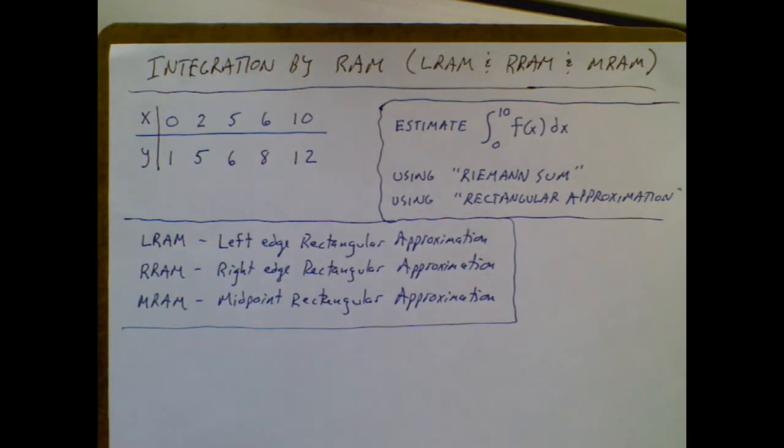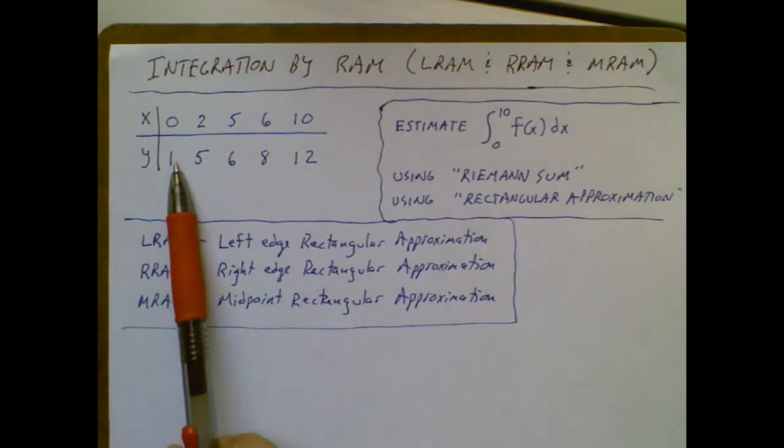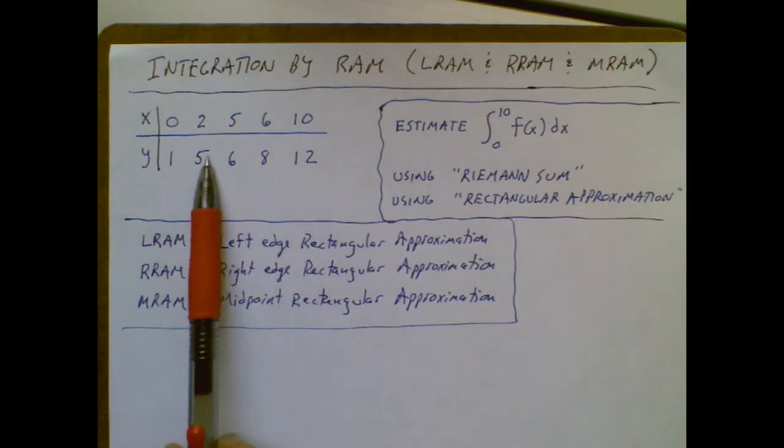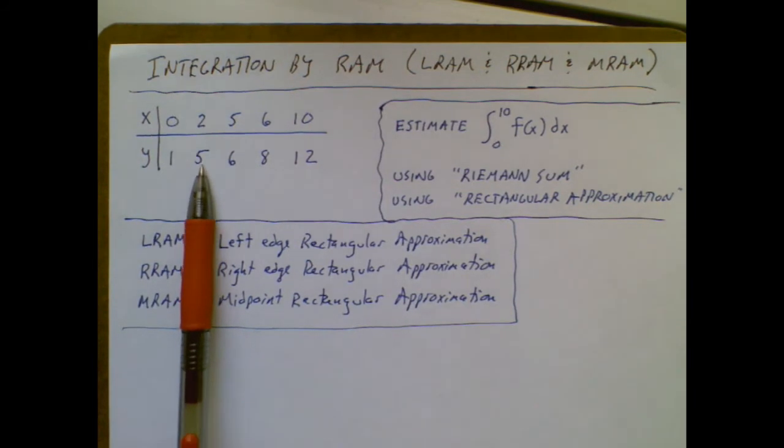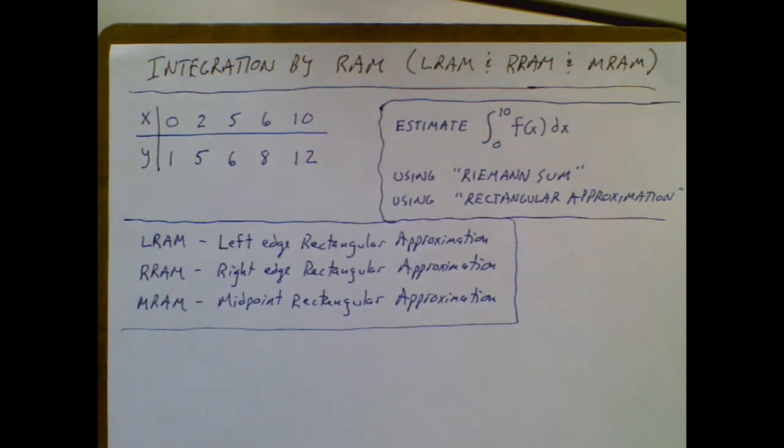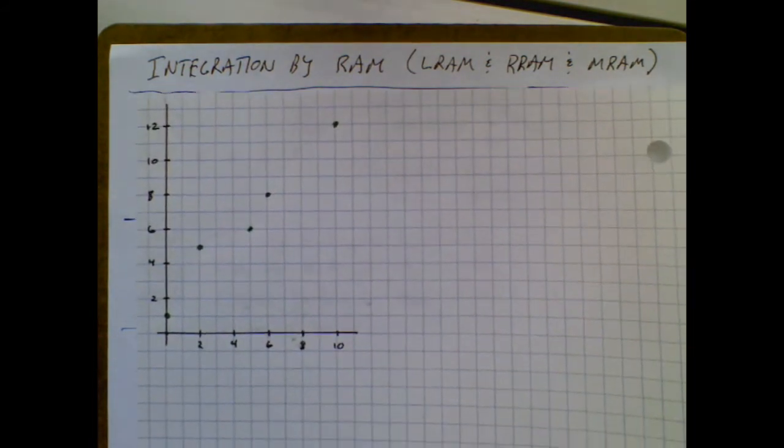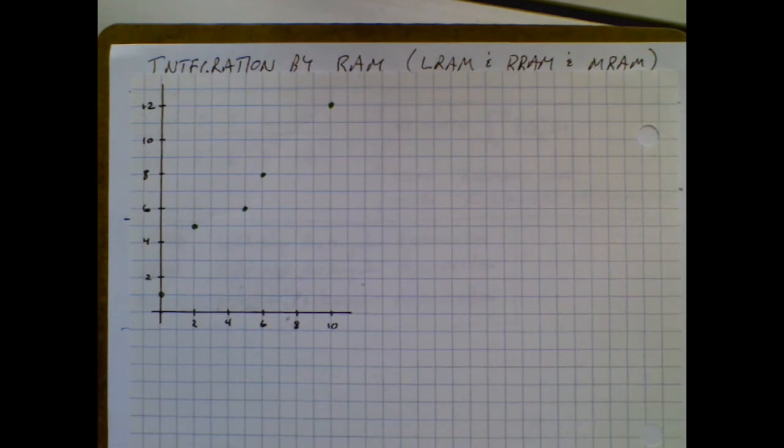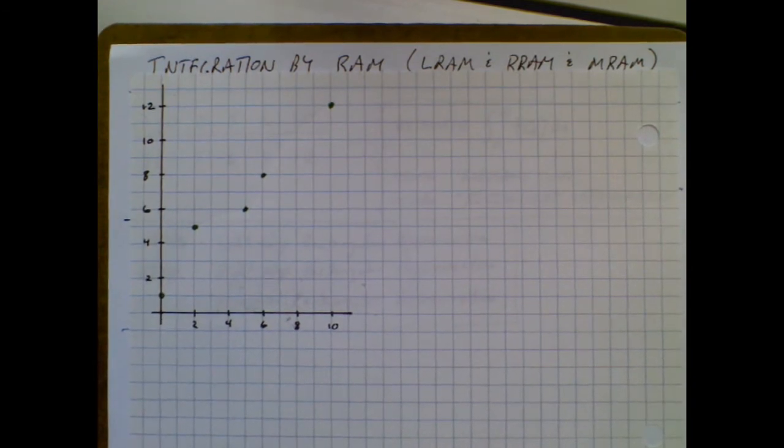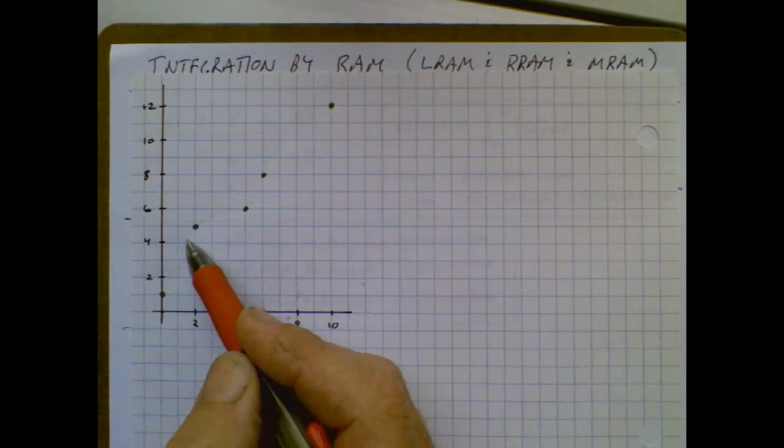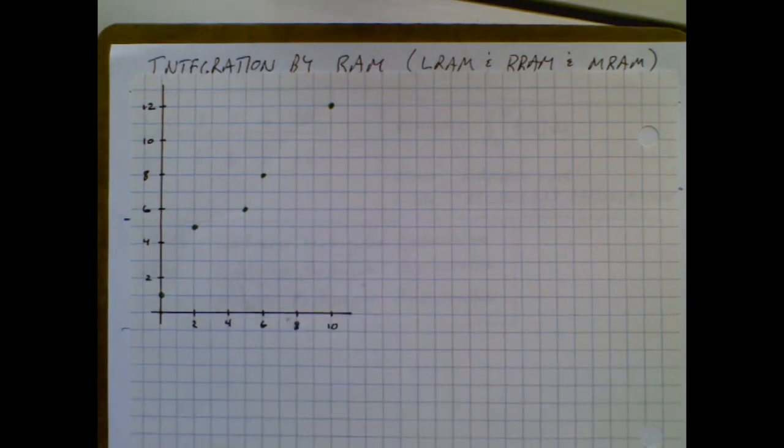When you get these types of problems, they're almost always going to be associated with a data table. So this data table doesn't have any meaning to any real world phenomenon, but we're going to use it. And so what you need to imagine is this data table turned into a graph. So if I were to just graph it by the data points they gave us, it would look like that. And we could connect the dots, and we would get this very jagged, piecewise function.